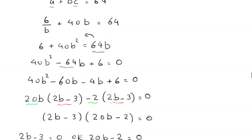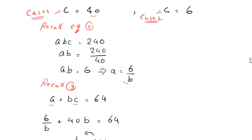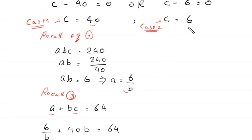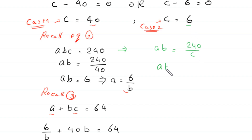Now we solve Case 2. In Case 2, we have C equals 6. Using equation 1, A times B equals 240 divided by C, which is 240 divided by 6, giving A times B equals 40.